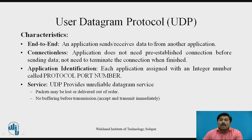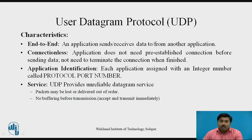UDP provides unreliable datagram service. Unreliable means that packets may be lost or delivered out of order at the receiver side. As compared to TCP, which provides packets in order with the help of flow control and error control, UDP has no buffering before transmission — when data comes from the IP layer to UDP, it is sent directly to the application without being held in a buffer.